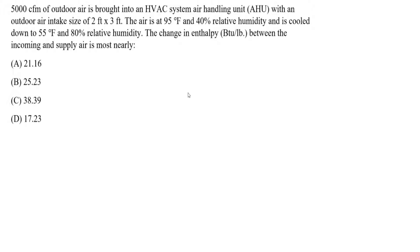So here we're looking at an HVAC system and we're specifically told we have 5,000 cubic feet per minute of outdoor air brought into an HVAC system with an air handling unit, an AHU, with an outdoor air intake size of 2 by 3 feet. The air is at 95 degrees Fahrenheit at 40% relative humidity. Then it is cooled down to 55 degrees Fahrenheit and 80% relative humidity. The change in enthalpy between the incoming and supplied air is most nearly what?